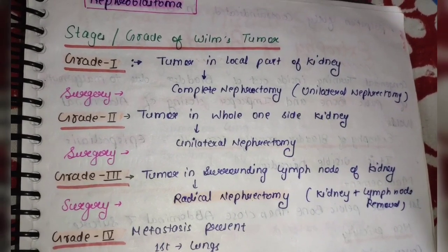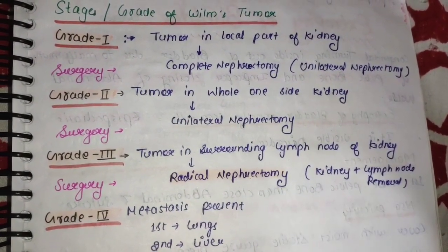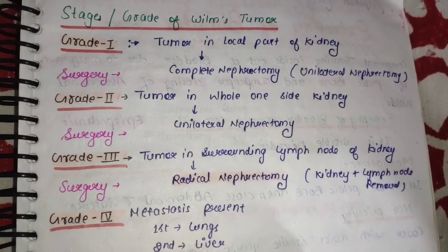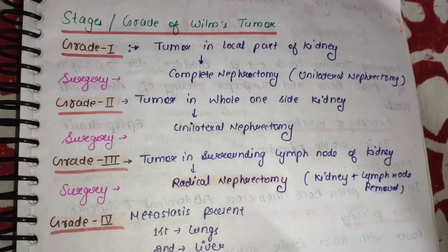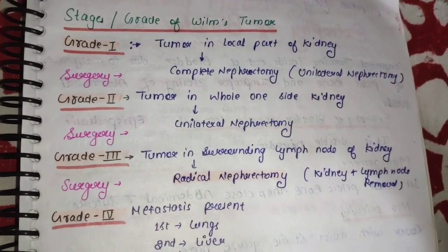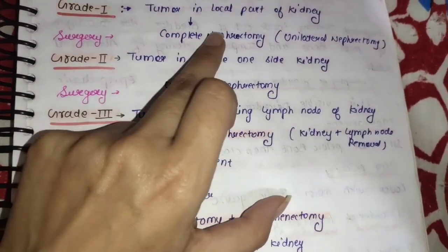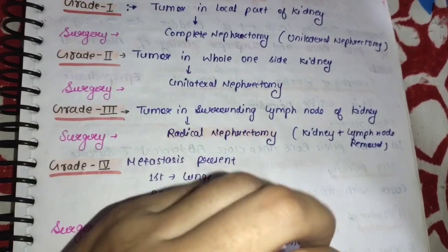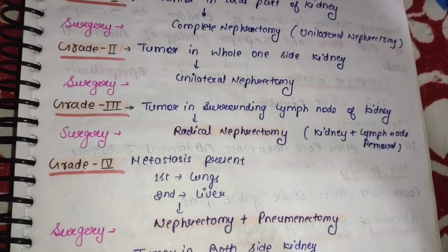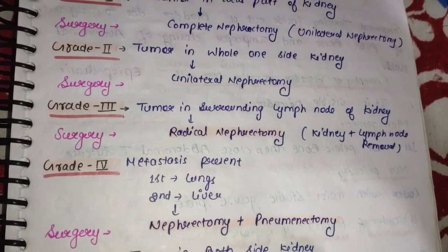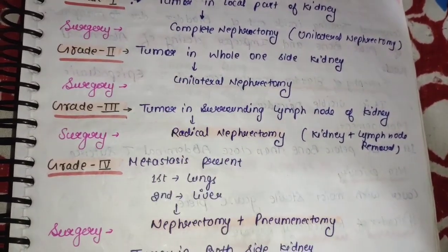Next, stages or grades of Wilms tumor. Grade 1: tumor in local part of kidney — इसके अंदर जो tumor होता है ये kidney के local part में होता है, अभी दूसरे किसी भी organ पर spread नहीं हुआ है. इसको treat करने के लिए nephrectomy perform की जा सकती है, means kidney का surgical removal. Grade 2: tumor in whole one side kidney — जो tumor था वो अब पूरी एक kidney में होगा, इसके लिए surgery की जाएगी unilateral nephrectomy, means एक side की kidney को remove करना.